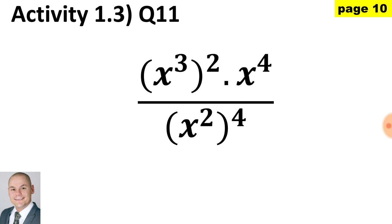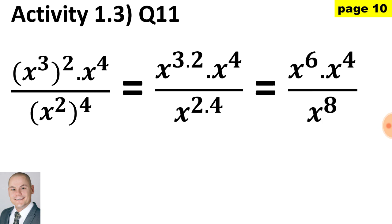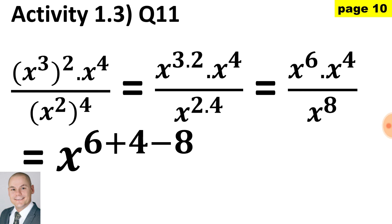In question 11, we have a fraction. Above the line: a power of x to the 3 raised to the exponent of 2, multiplied by x to the 4. Below the line: a power of x squared raised to the exponent of 4. The same rule applies — even though we are dividing, we have x to the 3 multiplied by 2 above, and x to the 2 multiplied by 4 below, giving us x to the 6 multiplied by x to the 4, all divided by x to the 8. Above the line, same bases — we add the exponents. Below the line, same bases — we subtract the exponents. So we have base x to the exponent of 6 plus 4 minus 8, giving a final answer of x squared.